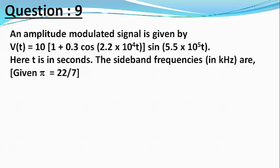Here t is in seconds. The sideband frequencies in kilohertz are, given π = 22/7.